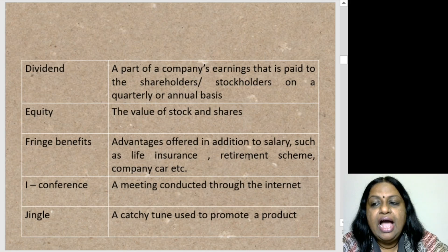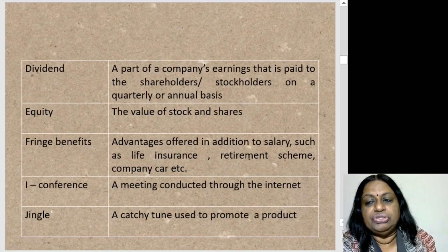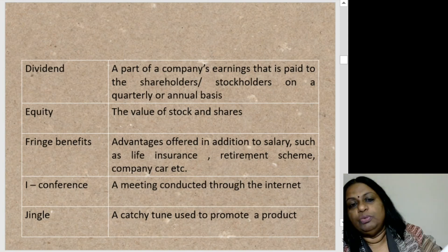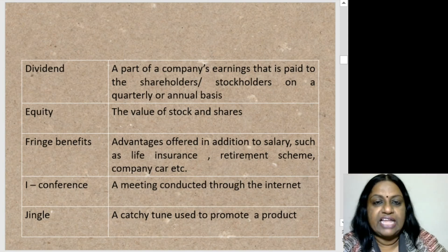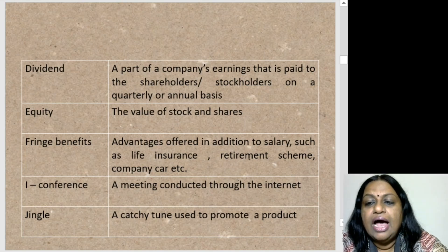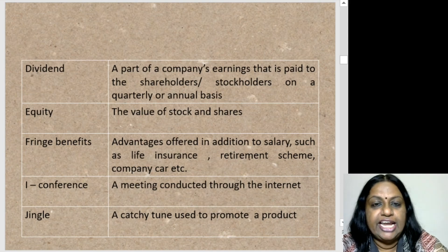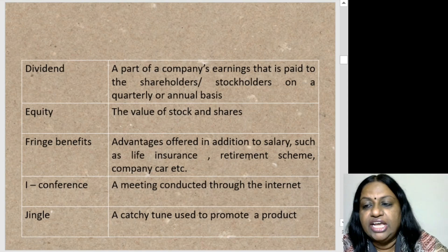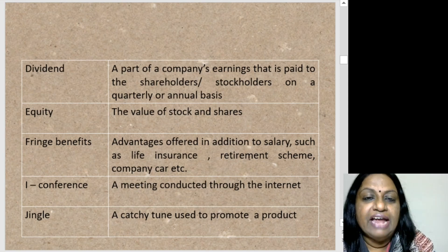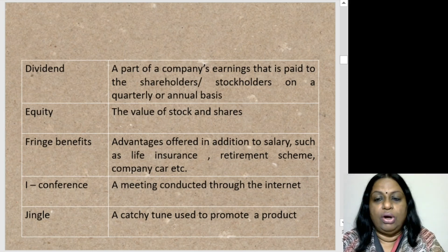Fringe benefits: advantages offered in addition to salary, such as life insurance, retirement schemes, company car, etc. When you apply for jobs, you must know what the perks or fringe benefits are. I-conference: a meeting conducted through the internet — during COVID times we have seen a lot of i-conferences. Jingle: a catchy tune used to promote a product — it's the little song that comes with every advertisement. That's called a jingle.